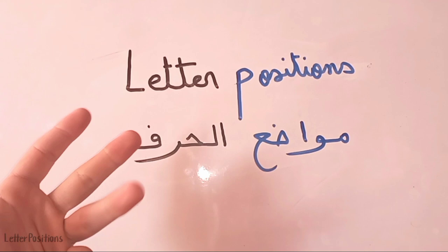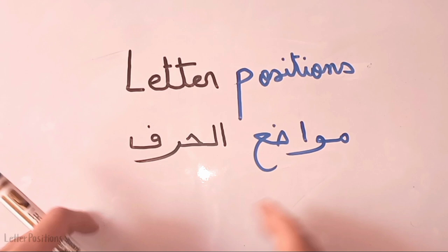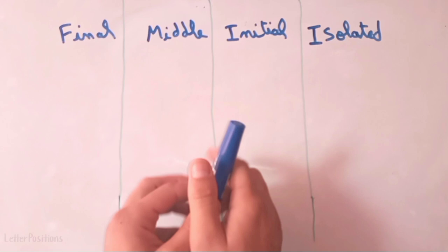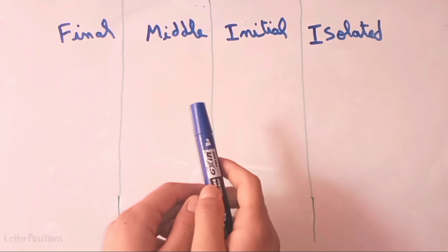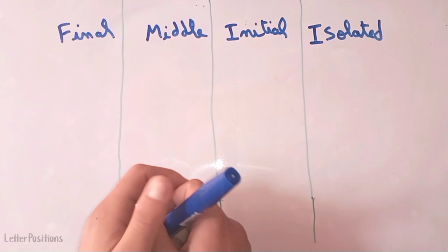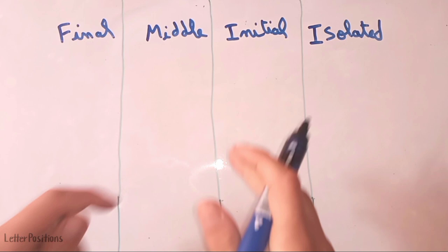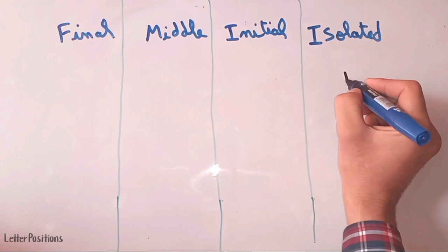There are 4 positions: the isolated form, the initial form, the middle form, and the final form. We're going to see all of these. As I said, there are 4 forms of the Arabic letter — Araba'atu mawada'a. Let's start with the first letter, Al-harf al-awwal, which is harfu l-alif.